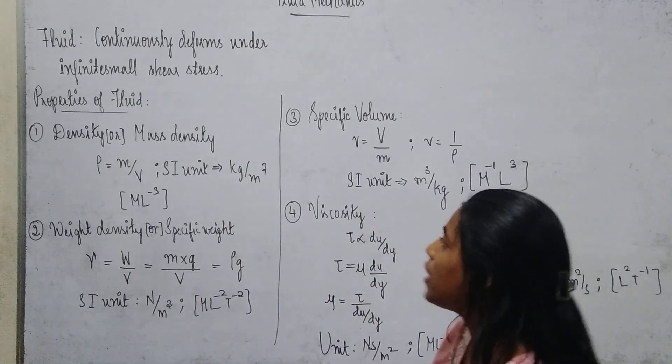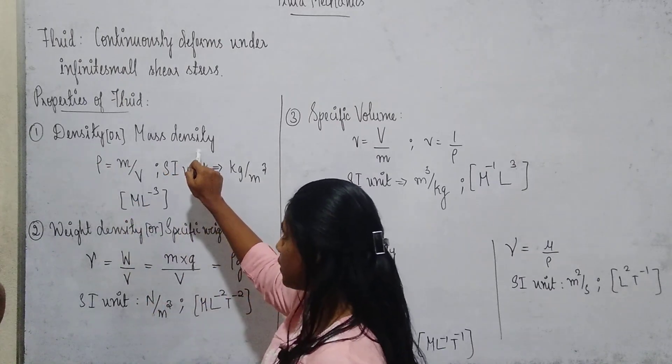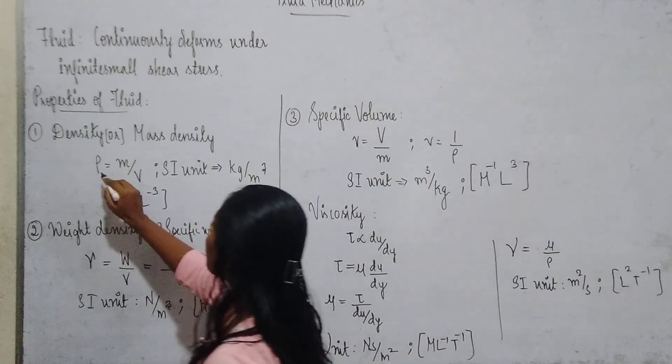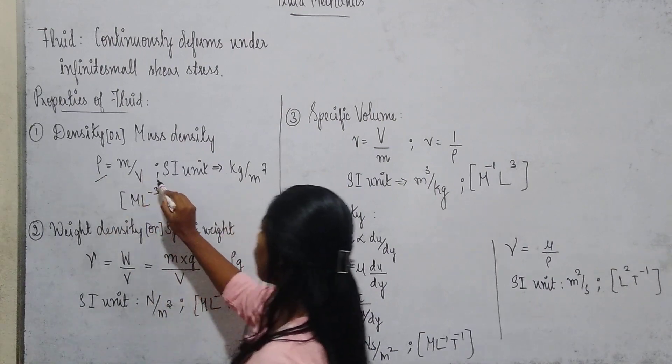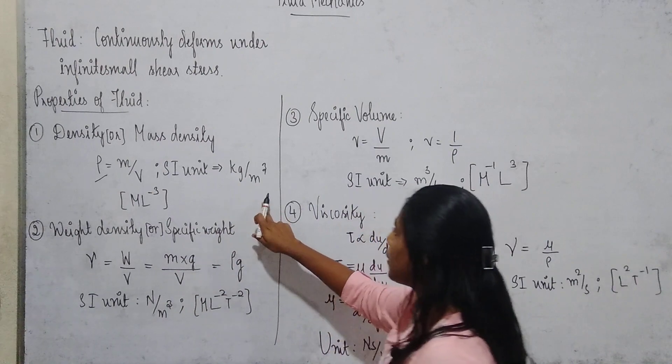We will see about the properties of fluid. The first property of fluid is density, also called mass density. This density is represented by rho. Rho equals mass by volume, and the SI unit of density is kilogram per meter cube, and dimension is M L^-3.